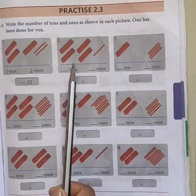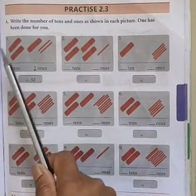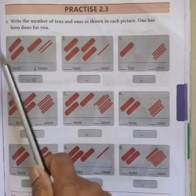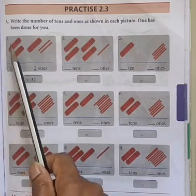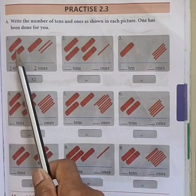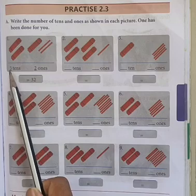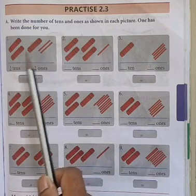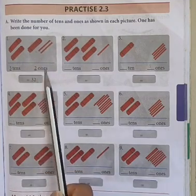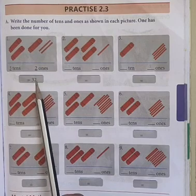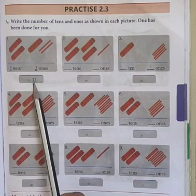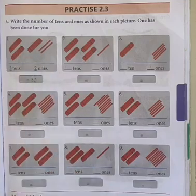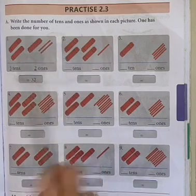First question: look here. These are the tens groups. How many tens are there? 1, 2, 3. There are 3 groups of tens, therefore 3 tens. And how many remaining ones are there? 1 and 2, therefore 2 ones. The number form is 32. That means how many sticks are there? 32. This is the answer for the first question.